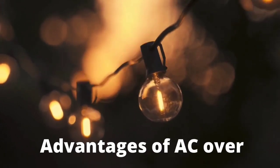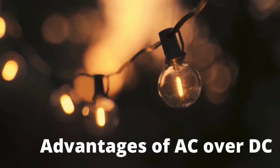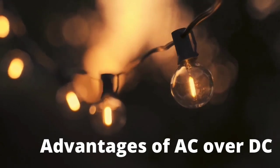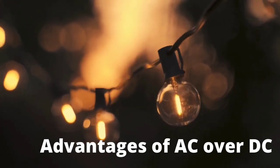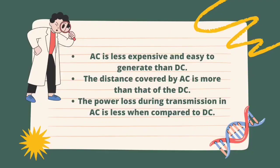Now let's talk about the advantages of alternating current over direct current. First, AC is less expensive and easier to generate than DC. Second, the distance covered by AC is greater than that of DC, since DC loses electric power over long distances. Third, the power loss during transmission in AC is less than when compared to DC.